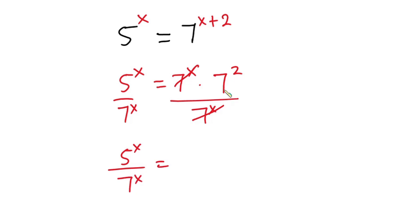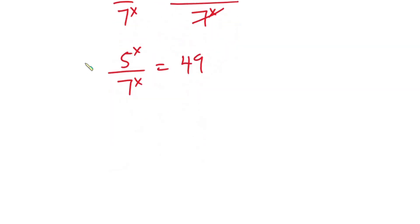...7 to the power 2, which is 49. Now from indices, if you have a to the power b over c to the power b, this is the same as a over c to the power b.